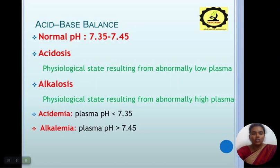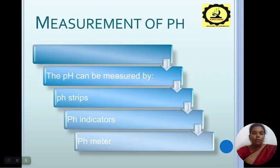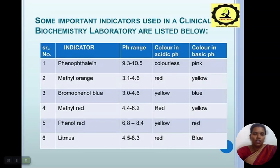A base is any compound which combines with H+ ions in a solution — that is, a proton acceptor — for example bicarbonate, which accepts H+ ions. Normal plasma pH is 7.35 to 7.45. Acidosis is the physiological state resulting from abnormally low plasma pH. Alkalosis is the physiological state resulting from abnormally high plasma pH. Acidemia is plasma pH less than 7.35; alkalemia is plasma pH greater than 7.45. pH can be measured in three ways: pH strips, pH indicator, and pH meter.